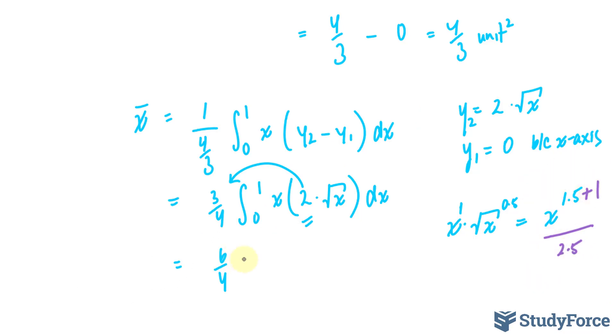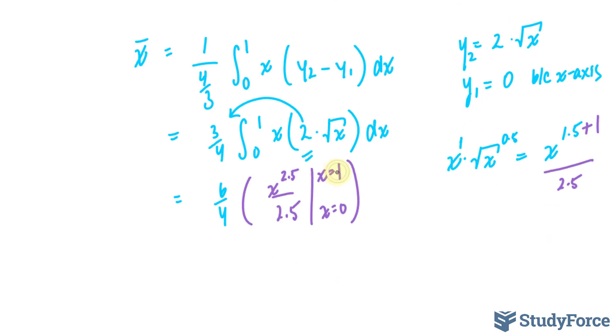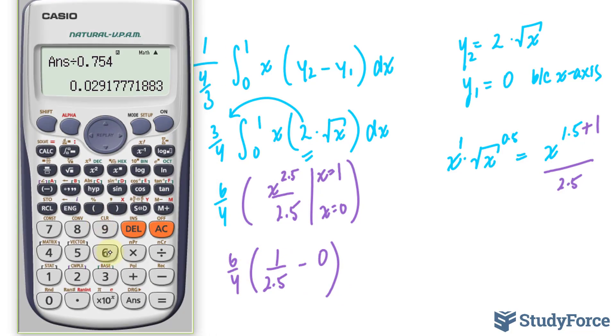Now that I've found the integral, I'll place it right here. We end up with x to the power of 2.5 over 2.5. When x is equal to 1, and when x is equal to 0. Substituting 1 into here, we end up with simply 1 over 2.5. And if I substitute 0 into here, I end up with 0. So I have 6 over 4 times 1 over 2.5, using my calculator. 6 over 4 times 1 over 2.5 gives me 3 over 5.